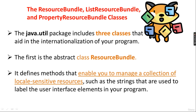The java.util package includes three classes that aid in internationalization, that is worldwide usage of your program. The first is the abstract class ResourceBundle. It defines the methods that enable you to manage a collection of locale-sensitive resources, such as strings that are used to label the user interface elements in your program.